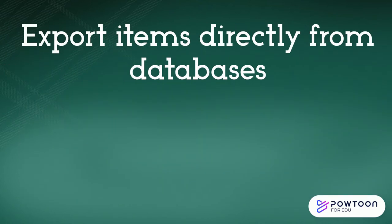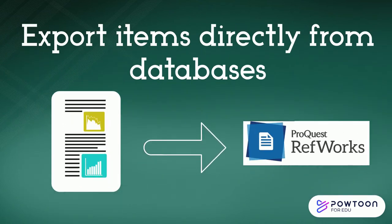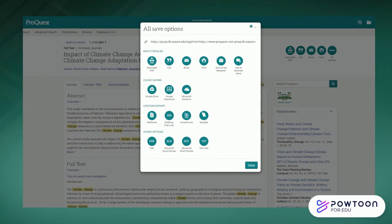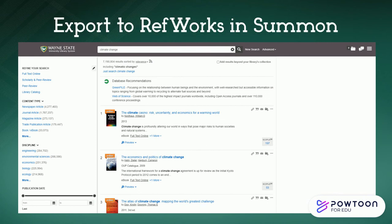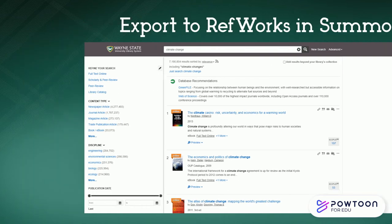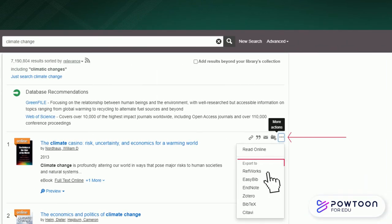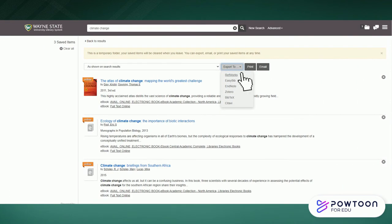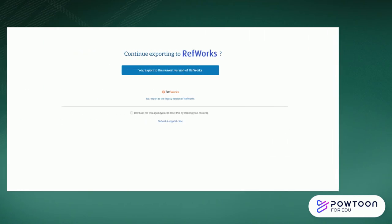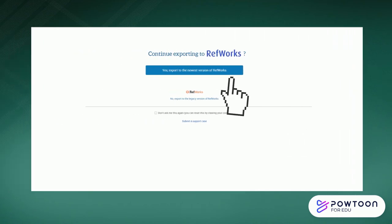To start using RefWorks, you can export most items directly from the database you accessed them from. Most likely there will be an export or save to RefWorks link. You can also export to RefWorks if you found an item when searching within Summon. You can either click on the three-dot more actions icon and export to RefWorks, or save multiple items and export from your saved folder. If it gives you the option, click on export to the new RefWorks.